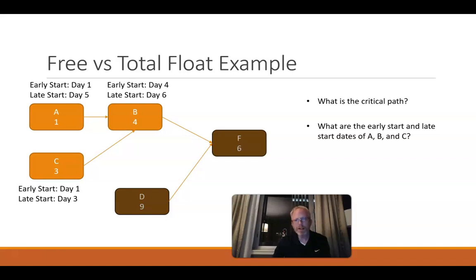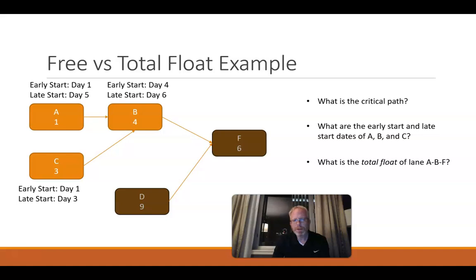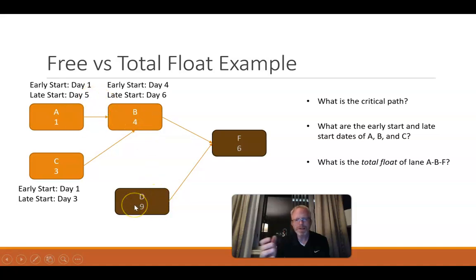Now we have late and early start dates — hopefully we remember those from critical path. What's the total float of lane A-B-F? A and B together is a total of five days, running parallel with D which is nine days. So nine minus five equals four days of total float.